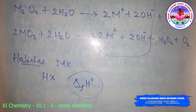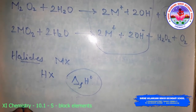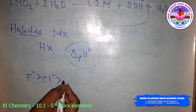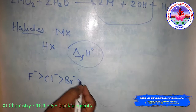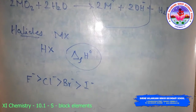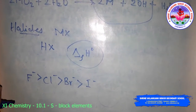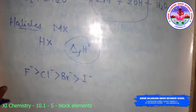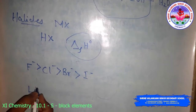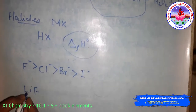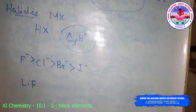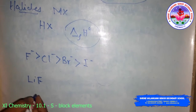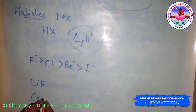The melting points follow the trend: fluoride > chloride > bromide > iodide. Usually all these halides are soluble in water. Lithium fluoride has low solubility in water because it has a high lattice enthalpy. The low solubility of cesium iodide is also noted.